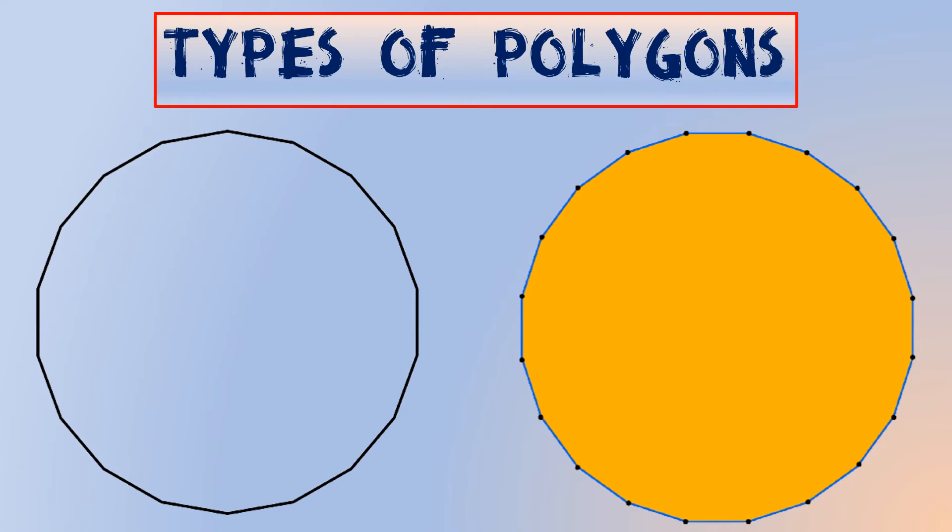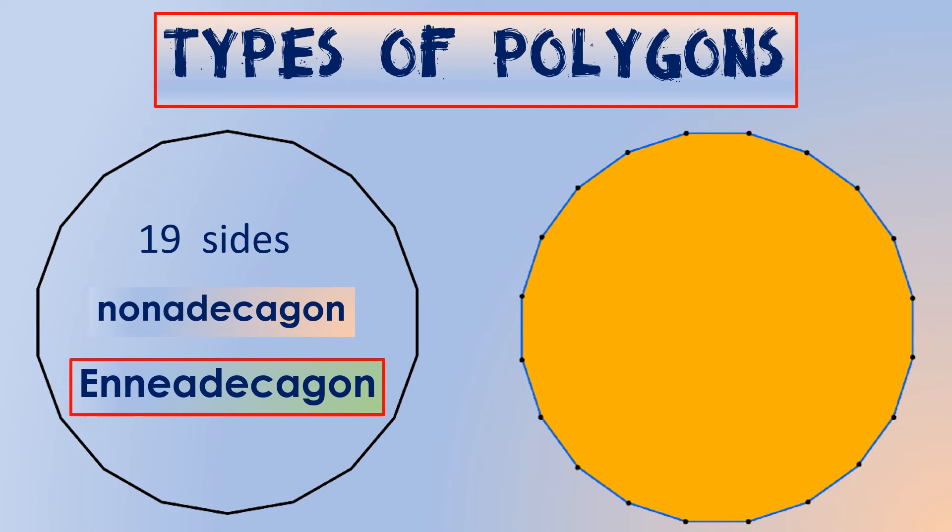A polygon with nineteen sides is called an enneadecagon, also known as nonadecagon, and a polygon with twenty sides is called an icosagon.